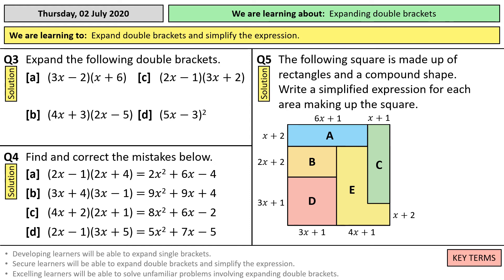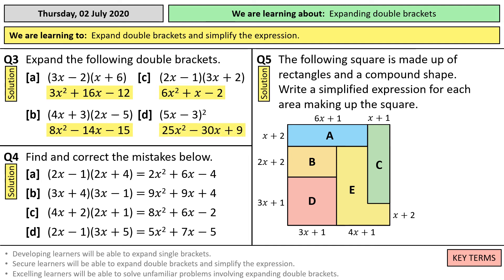Question three: a is 3x squared — we've got minus 2x plus 18x, so that gives you plus 16x, and then minus 2 times 6 gives you minus 12. B is 8x squared plus 12x minus 6x, which gives you minus 14x, and then minus 15. And C is 6x squared plus 4x minus 3x, which gives you plus x, and then minus 1 times 2, which gives you minus 2. And D is 25x squared minus 30x plus 9.